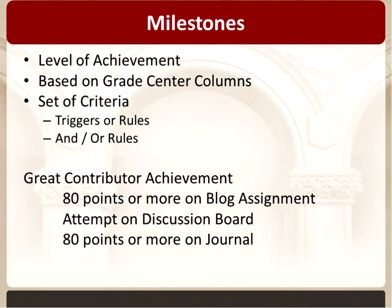A milestone is a really good way to start describing how this works. It's basically a level of achievement based on grade center columns, so all the criteria is already in your grade center as something you're going to grade. We're going to talk about how you set up a set of criteria, which they call triggers or rules. The triggers or rules are basically what's going to trigger students to receive this milestone or badge based on how they're being graded in the grade center.